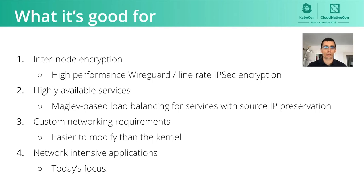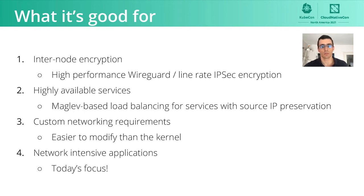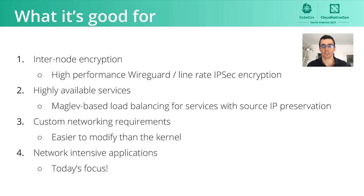You may legitimately wonder why we're doing all this — after all, Calico is working perfectly fine. Here are some example use cases where VPP provides benefit. The first is internode encryption: VPP has an extremely performant IPSec implementation, so we can use that to encrypt traffic between nodes at basically line rate — 40 gigabits per second. A second use case is exposing highly available services. We use Maglev as the load balancer implementation for Kubernetes services. Maglev is a consistent layer 4 load balancer that allows connections to survive node failures, and it also does DSR — Direct Server Return — which reduces the global networking load on the cluster.